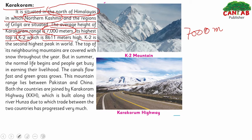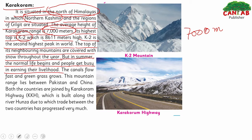K2 is the second highest peak in the world. The tops of neighboring mountains are covered with snow throughout the year. But in summer, normal life begins and people get busy earning their livelihood.